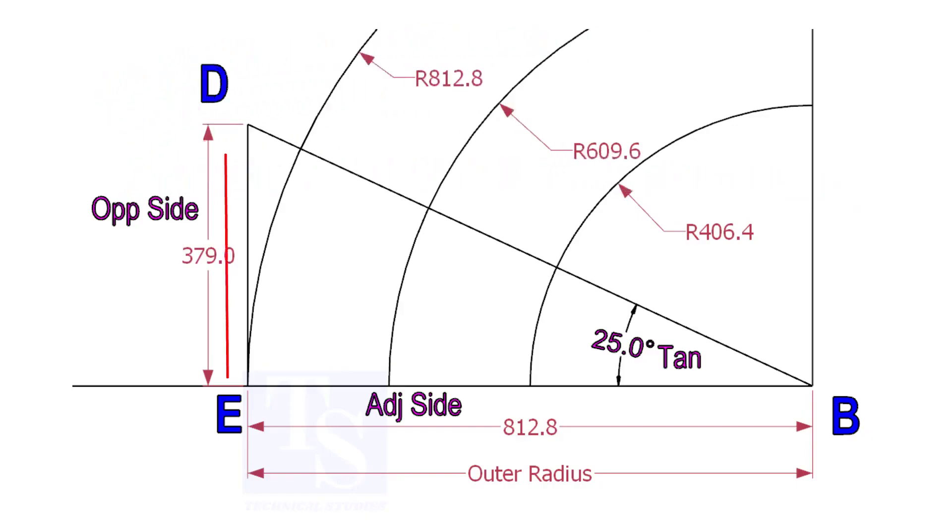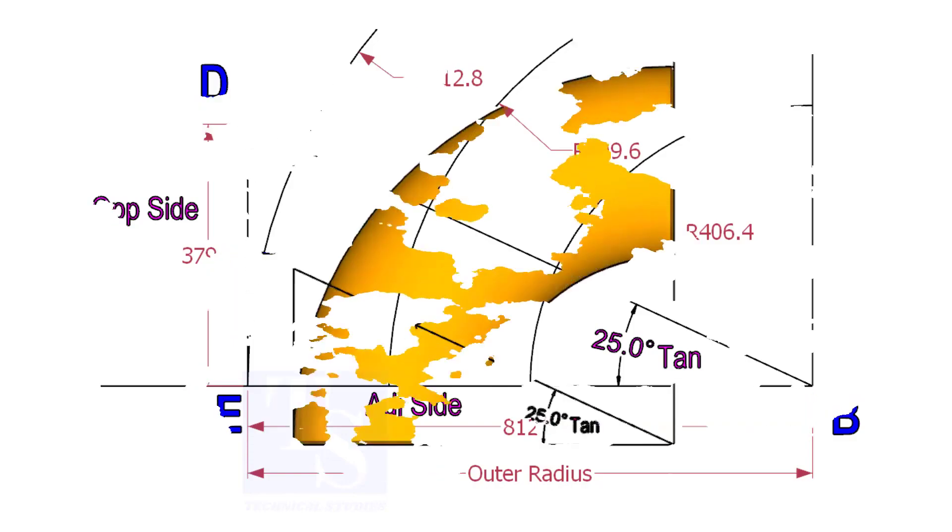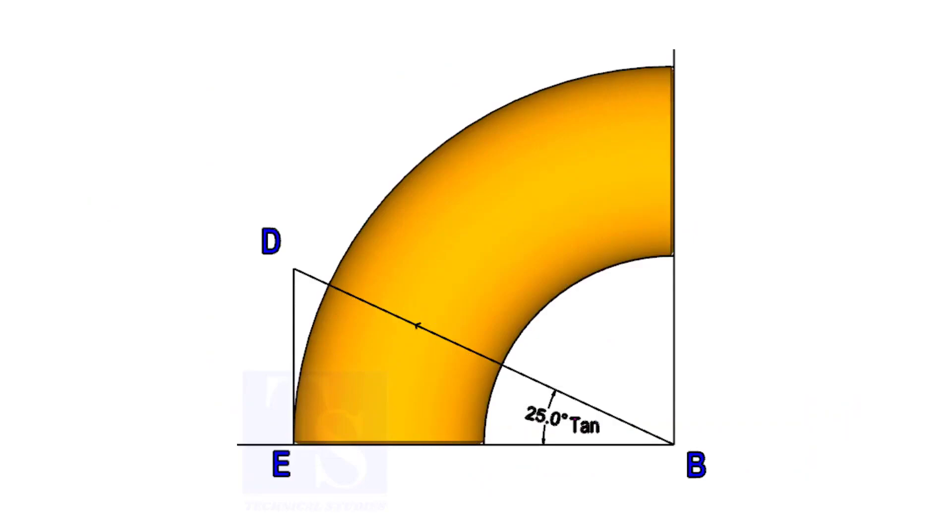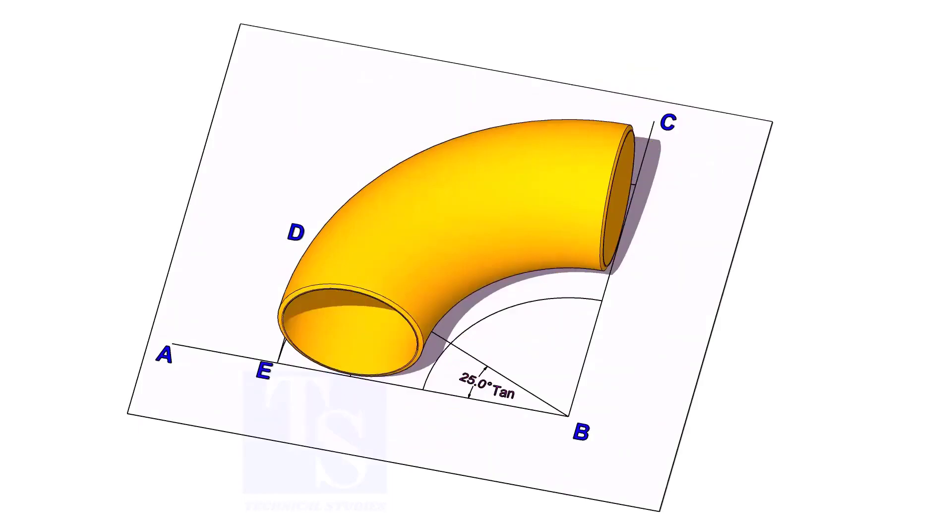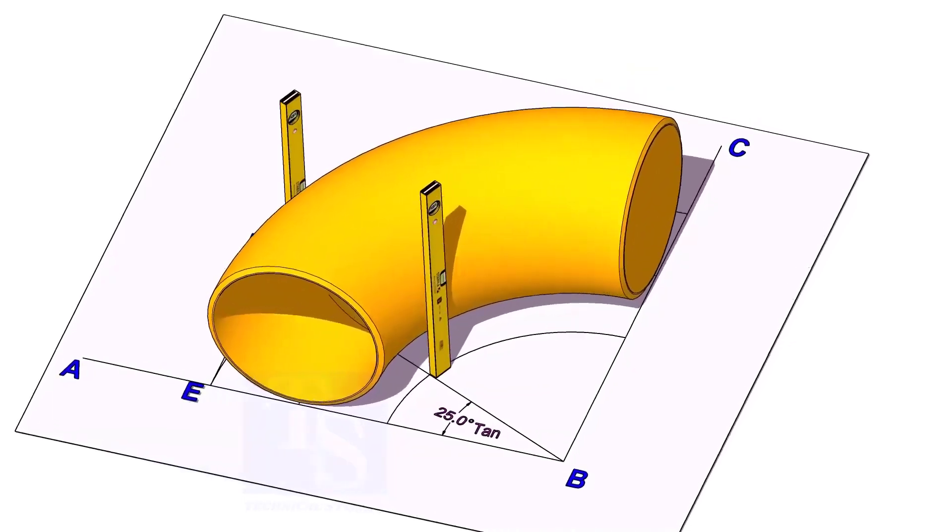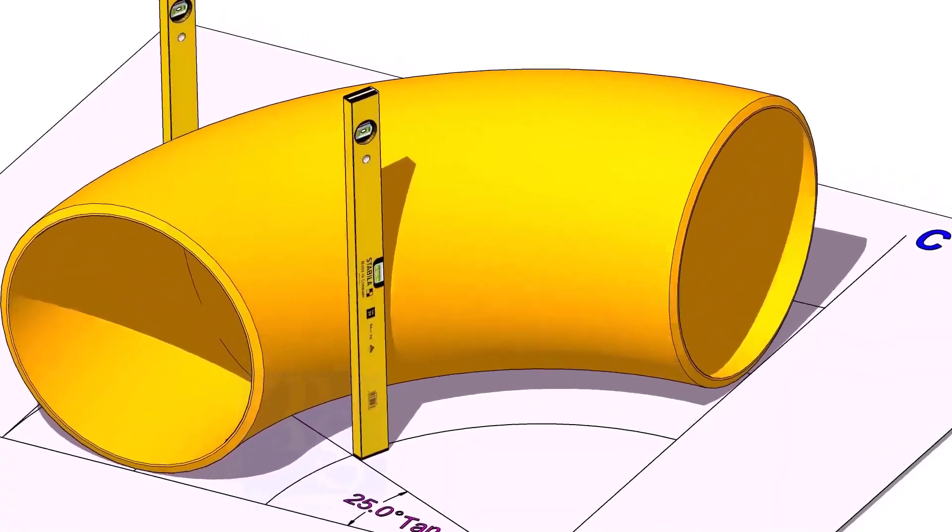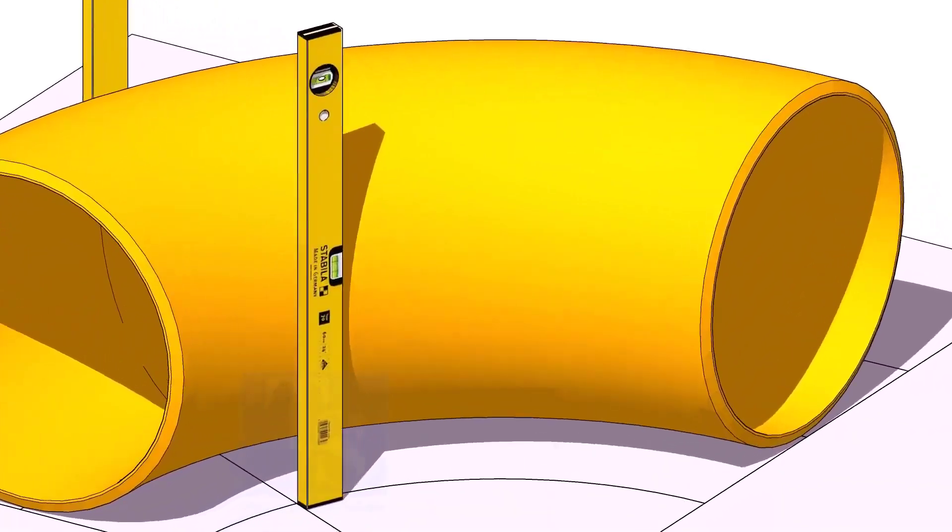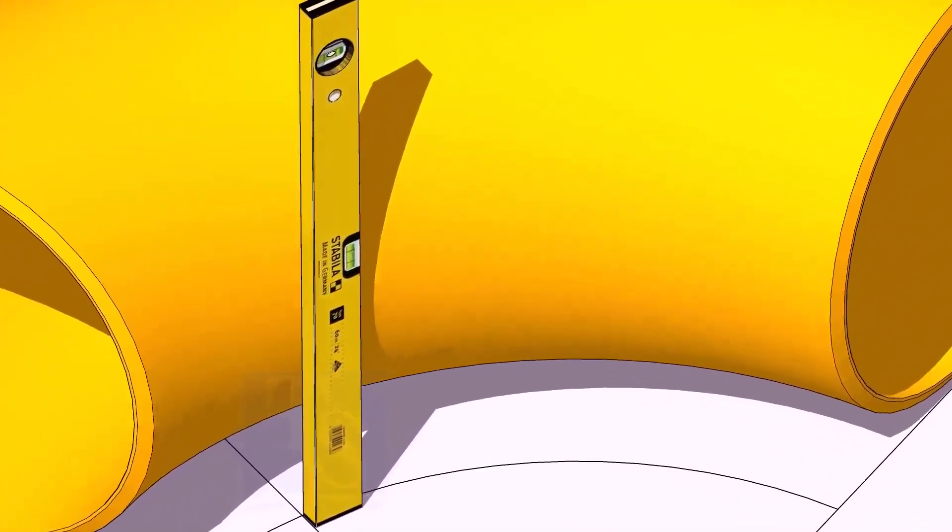Draw the line ED vertically and the slant line DB. I hope now you will be able to draw a line in any degree. Now, put the elbow exactly on the layout as shown. Hold two large level bottles at the edge of the elbow on both sides vertically, and strike a mark where the level bottle edge touches the elbow.